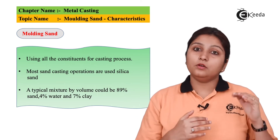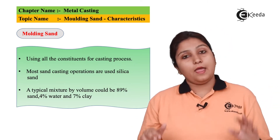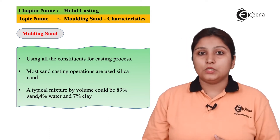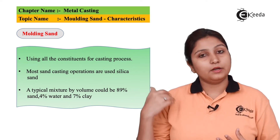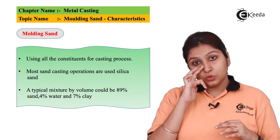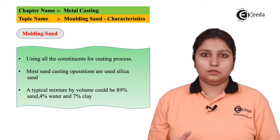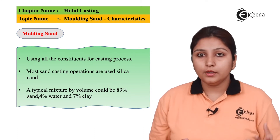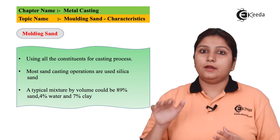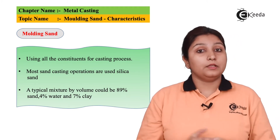If the sand is not vented properly or does not have the property of permeability, gases are trapped and do not reach the atmosphere — they get entrapped inside. What happens then is your casting becomes weak. So sand should be permeable in nature so that excess gases from the molten metal do not get entrapped in the sand.